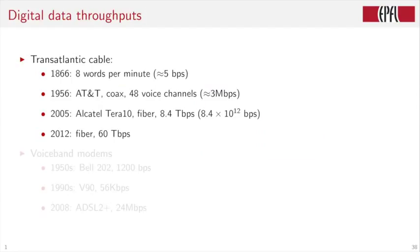Thanks to digital processing, the transmission of information has made tremendous progress. In the mid 19th century, a transatlantic cable would transmit 8 words per minute. That's about 5 bits per second. A hundred years later, a coaxial cable with 48 voice channels had already 3 megabits per second. In 2005, fiber optic technology allowed 10 terabits per second. The terabit is 10 to the 12 bits per second. And today, in 2012, we have fiber cables with 60 terabits per second. On the voice channel, the one that is used for telephony, in the 1950s, you could send 1200 bits per second. In the 1990s, that was already 56 kilobits per second. Today, with ADSL technology, we are talking about 24 megabits per second. Please note that the last module in the class will actually explain how ADSL works using all the tricks in the box that we are learning in this class.